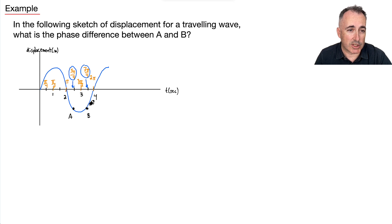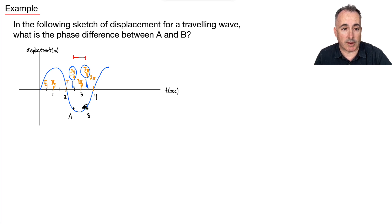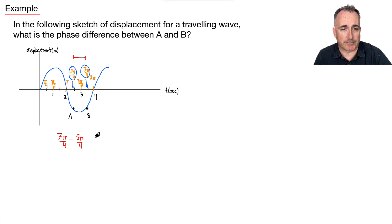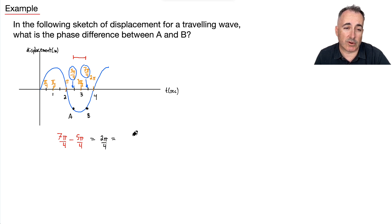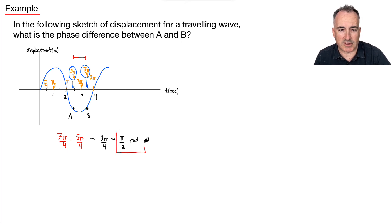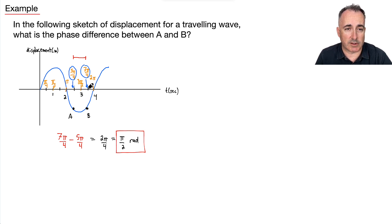A is at five pi over four and B is at seven pi over four. The phase difference is B minus A: seven pi over four minus five pi over four equals two pi over four, which reduces to pi over two radians. Another way to see it: getting from A to B requires two tick marks, each worth pi over four, giving two times pi over four which is pi over two. Either way, the phase difference is pi over two radians.